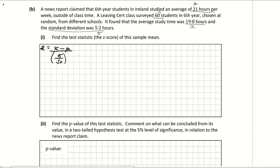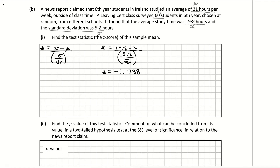I just have to fill it into my formula: Z equals X which is 19.8, subtract 21, divide by 5.2 over the square root of 60. That gives me a test statistic of minus 1.788. And that's B part one — not too difficult there.